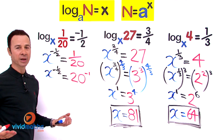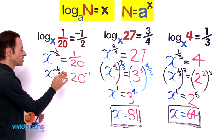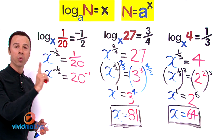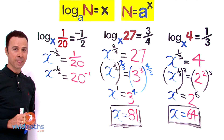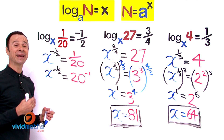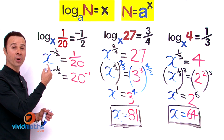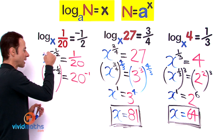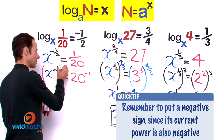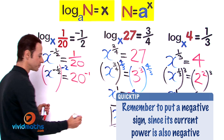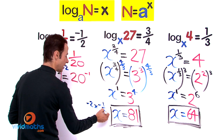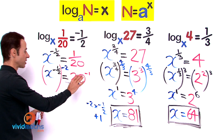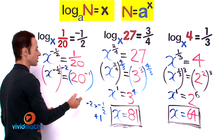Can we bring 20 down to a lower base? 20 is already at its lowest, so we leave it as is. Now we want to turn the negative 1 half into a 1. We use the reciprocal, but since this is negative, we multiply by negative 2 — because negative 2 times negative 1 half gives a positive 1. So we raise both sides to the power of negative 2.